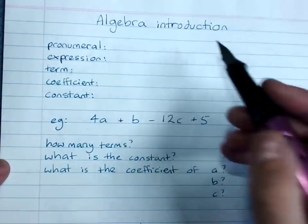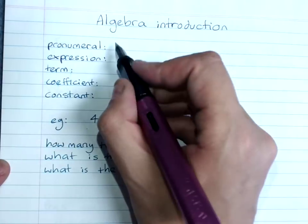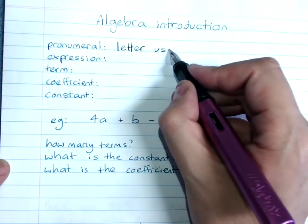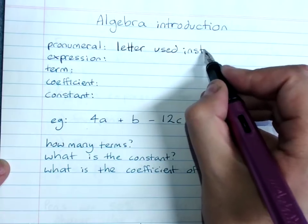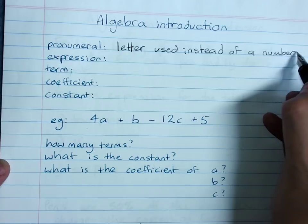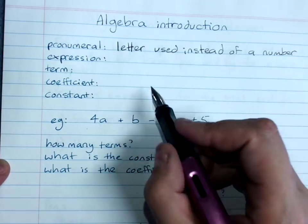This is a lot of the language to do with algebra. So a pronumeral is a letter used instead of a number. So it's representing a number.